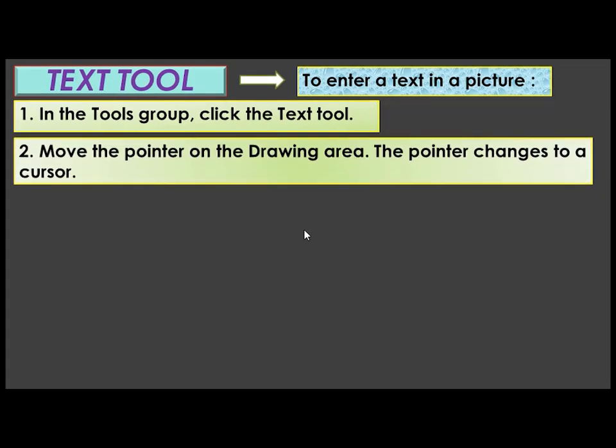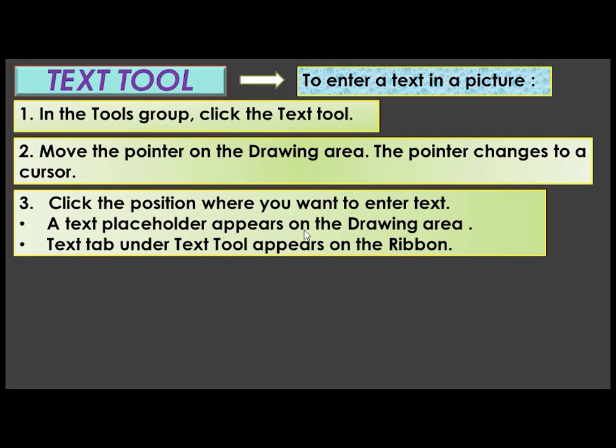In the tools group, click the text tool. Move the pointer on the drawing area. The pointer changes to a cursor. Click the position where you want to enter text.